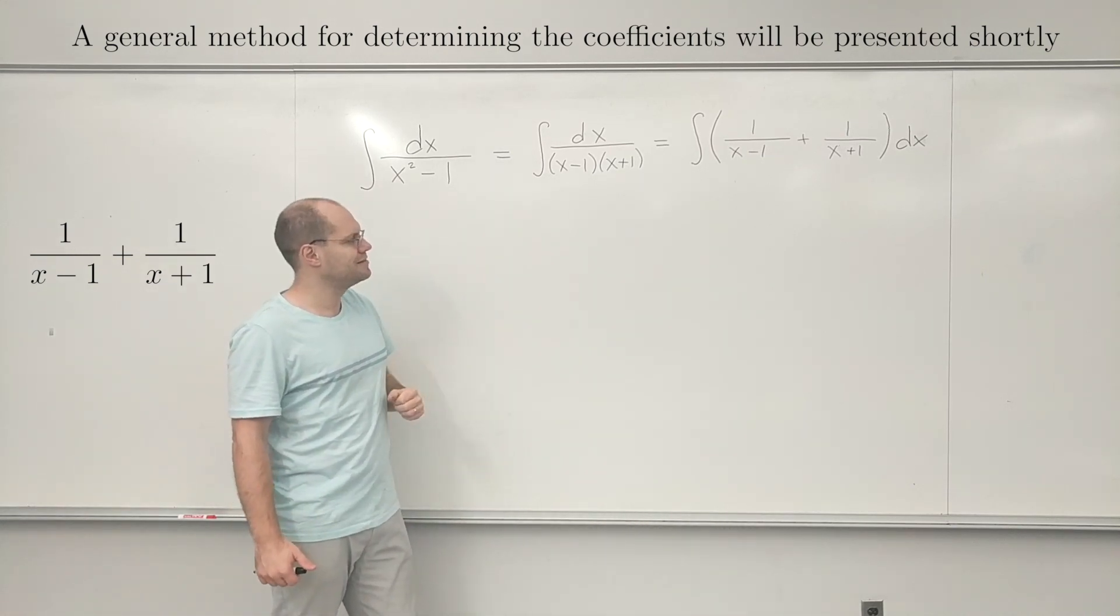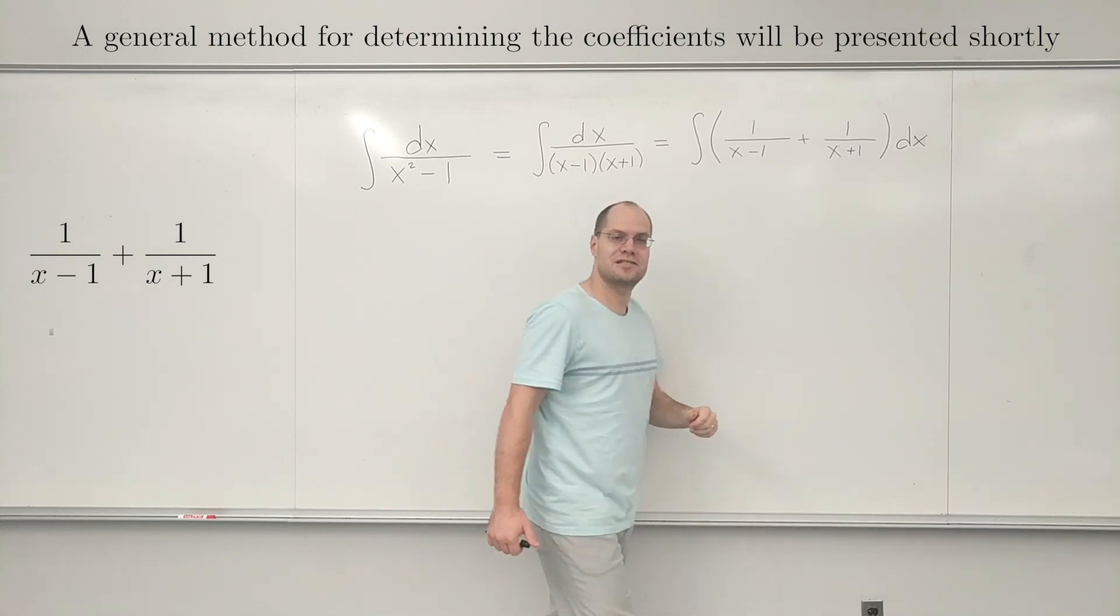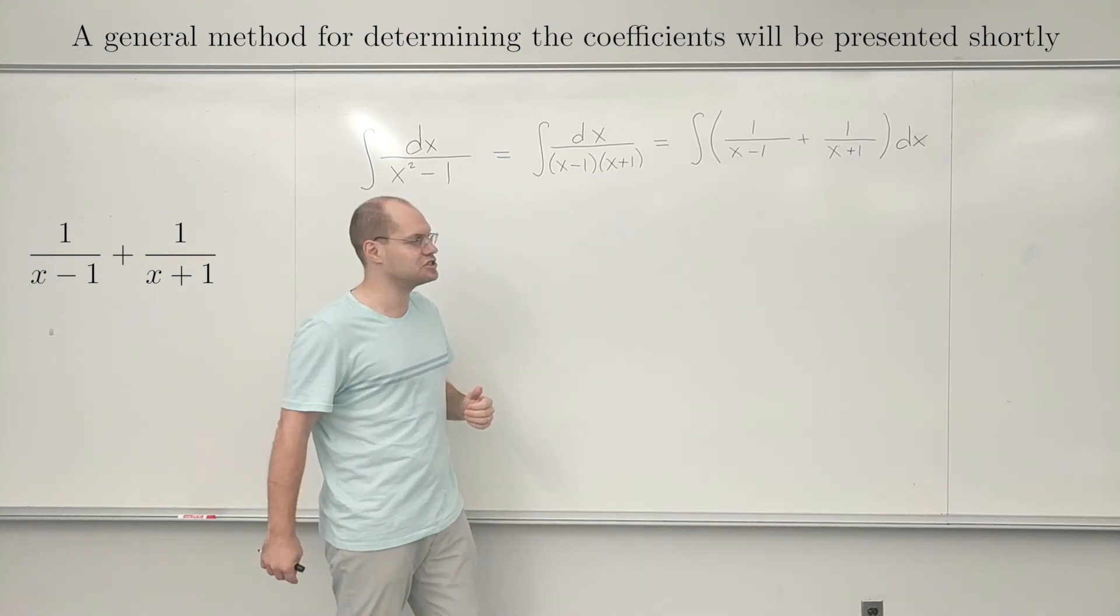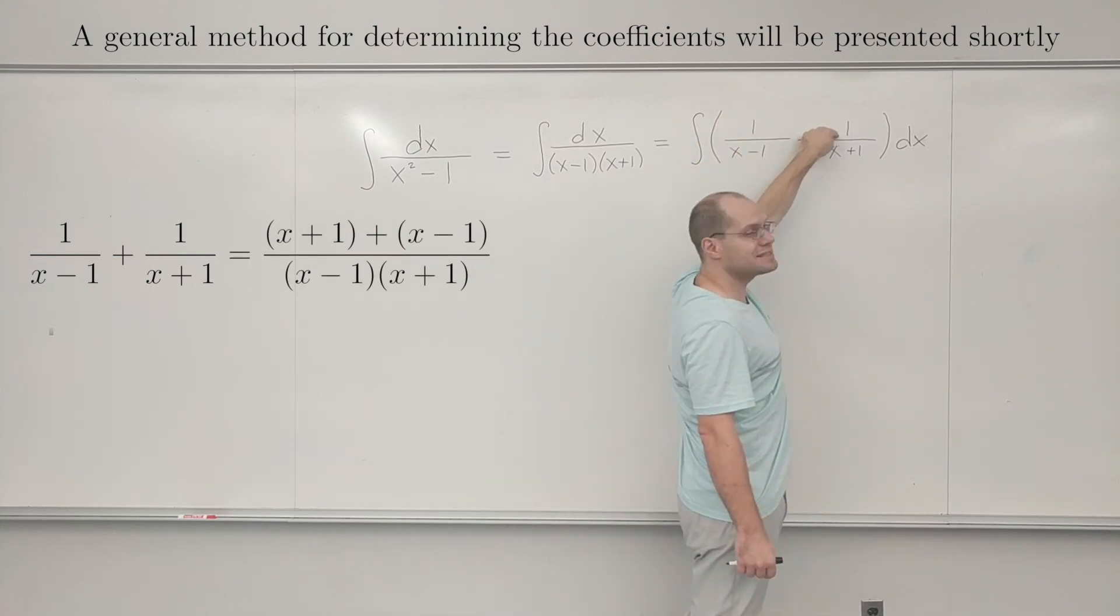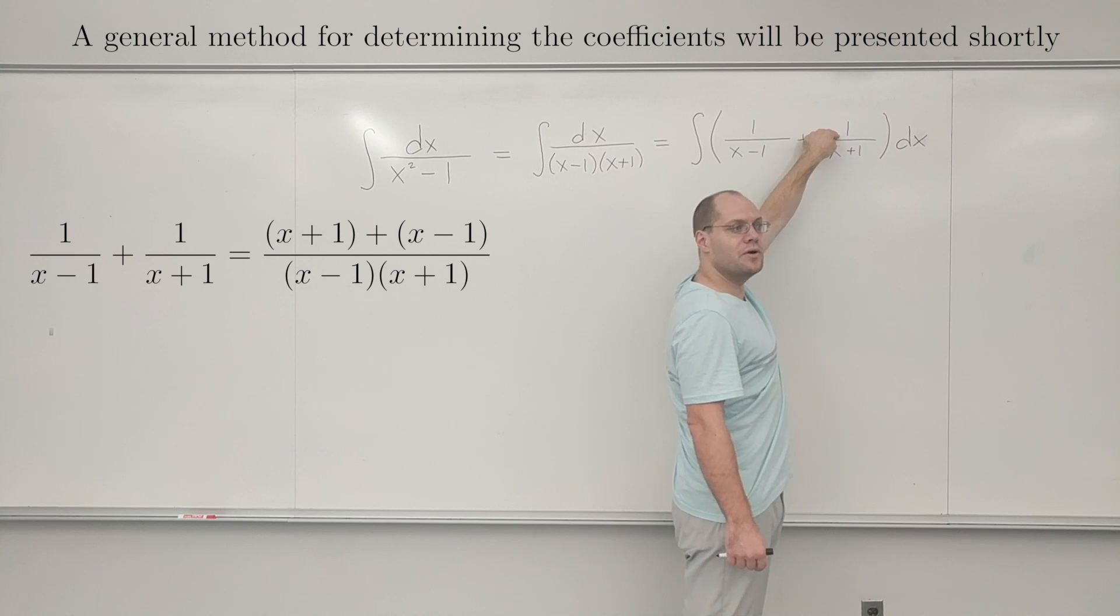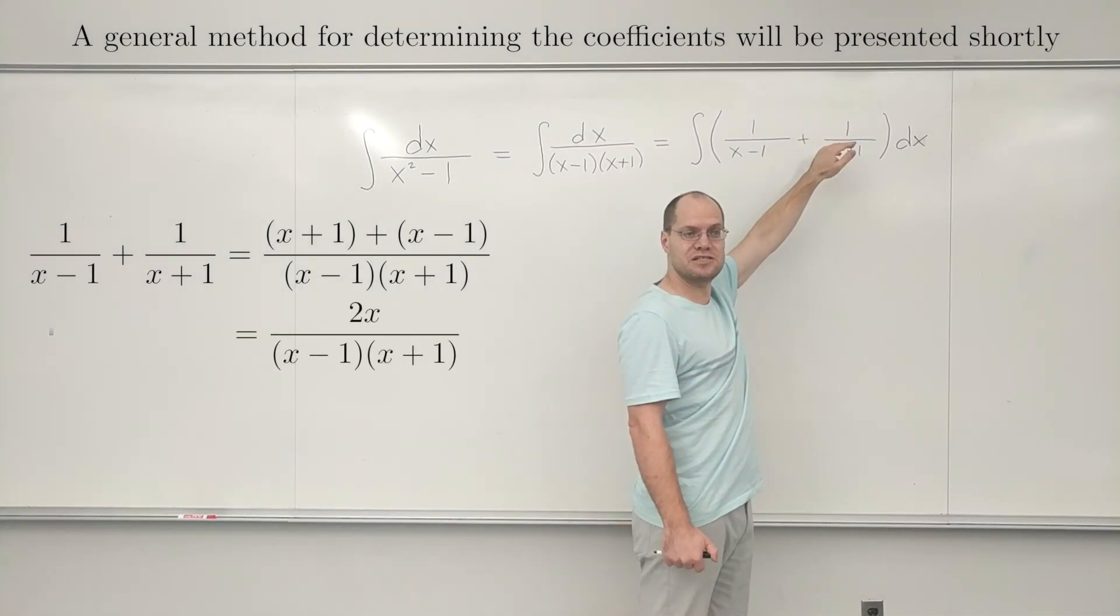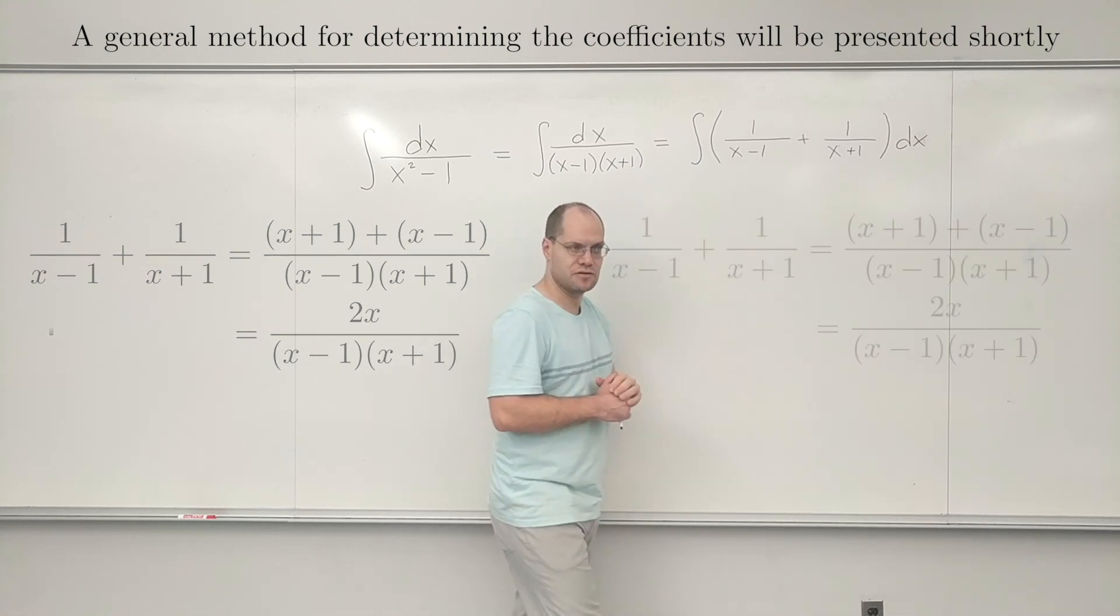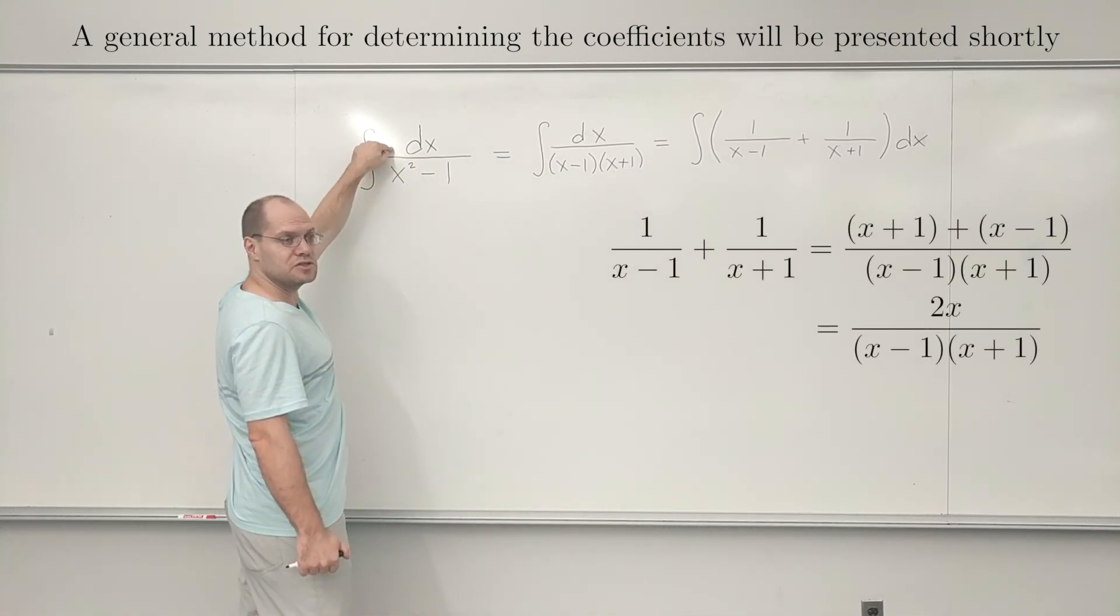Especially when you're just directly multiplying their denominators. There are no common multiples, no common factors among the denominators. So it's a straight addition. So this gets multiplied by x plus 1. This gets multiplied by x minus 1. When you combine them, you get 2x on top. Because plus 1 and minus 1 cancel each other.